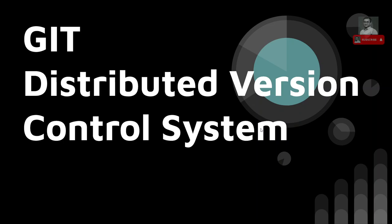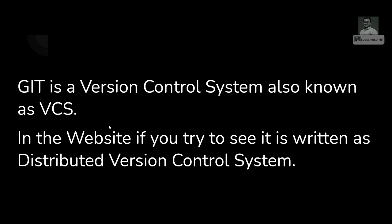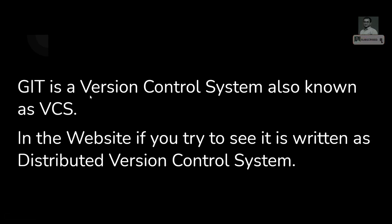Let us go one by one. Git is a version control system, also known as VCS. If you open any website — the Git website or Wikipedia — it will be written as a distributed version control system. One new term is added: distributed. Git has special advantages over a basic version control system, and that is the distributed thing, which we will learn in upcoming lessons.